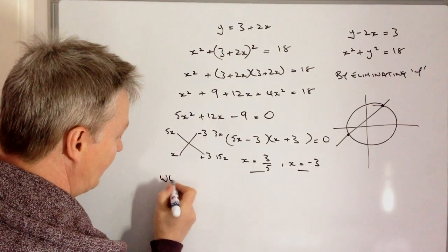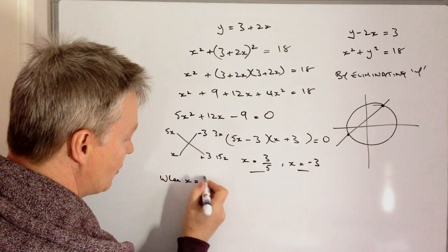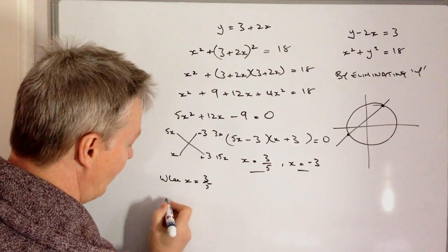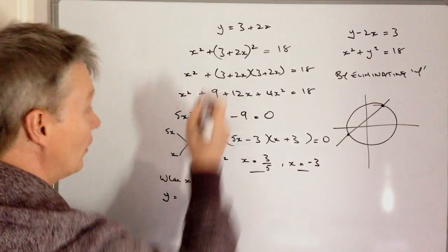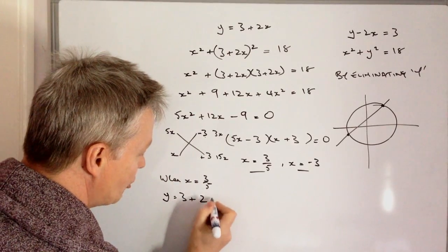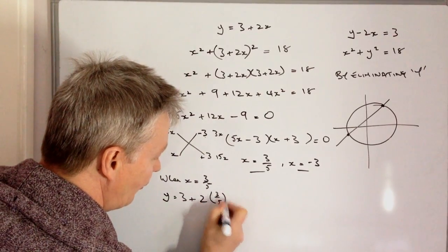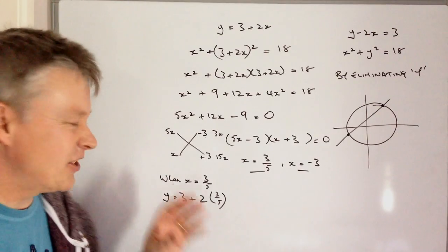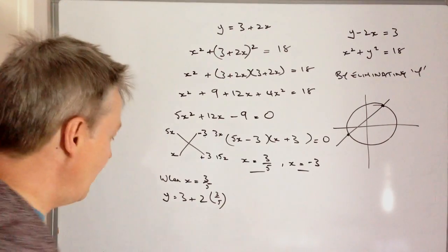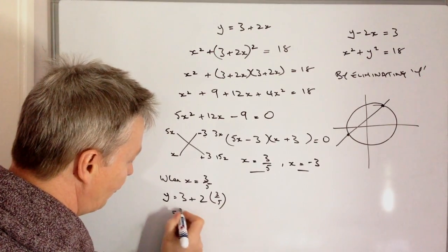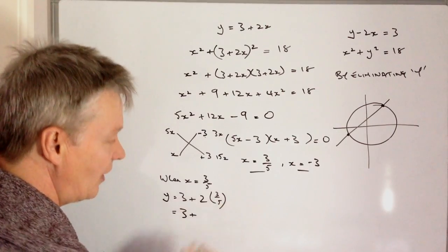So when x equals 3 over 5, y must equal 3 plus 2 times 3 over 5. Just a little bit of work with fractions here, but I've got 3 plus, now 2 times 3 over 5 is 6 over 5.